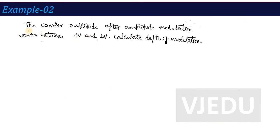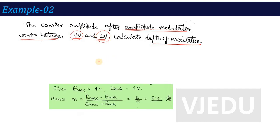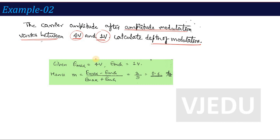Another example: the carrier amplitude after amplitude modulation varies between 4 volt and 1 volt. Calculate the depth of modulation (also called modulation index or percentage modulation — all the same). Since Emax and Emin of the AM wave are given, we use: M = (Emax − Emin) / (Emax + Emin) = (4 − 1) / (4 + 1) = 3 / 5 = 0.6.